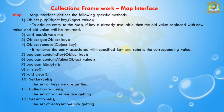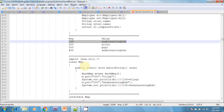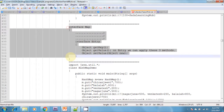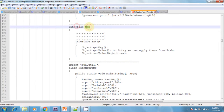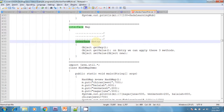Each key-value pair is called one entry. Without an existing Map object there is no chance of an existing Entry object. Hence the Entry interface is defined inside the Map interface — Entry is an inner interface of Map.